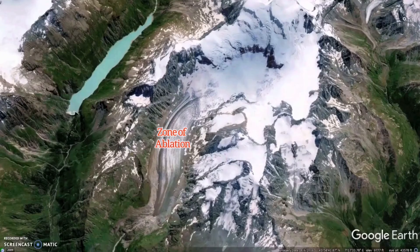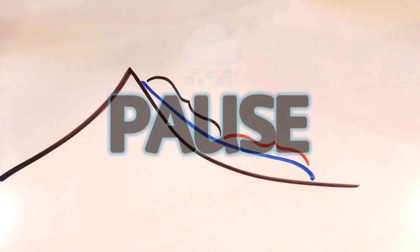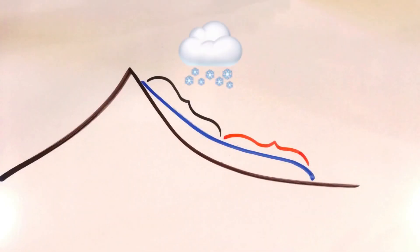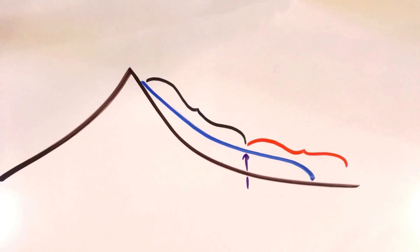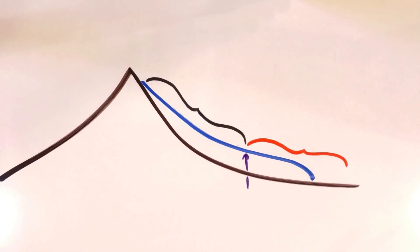Ice in the zone of ablation is older and looks kind of dirty. The line that lies right between the zone of accumulation and the zone of ablation is called the equilibrium point, or sometimes the snow line. The equilibrium point can move with time. What if snowfall increased? If snowfall increased, the equilibrium point would move downhill, because the increased snowfall expands the zone of accumulation, so the equilibrium point moves forward. In this situation, the glacier usually advances.